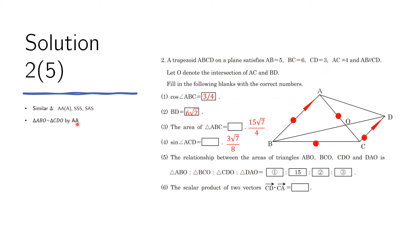By AA, triangle AOB is similar to triangle COD. This is because angle AOB equals angle COD as vertical angles of two intersecting lines, and angle OAB equals angle OCD as alternate interior angles since AC is a transversal of parallel lines AB and CD. Two equal angles confirm similarity.